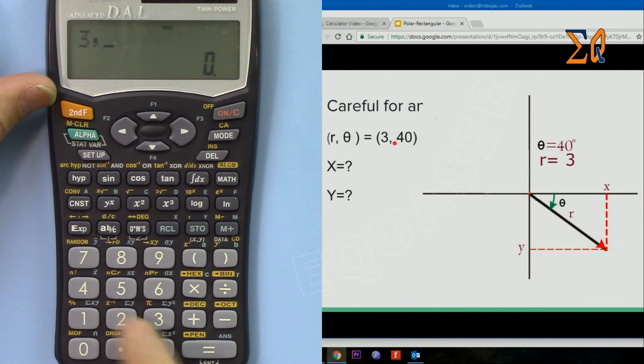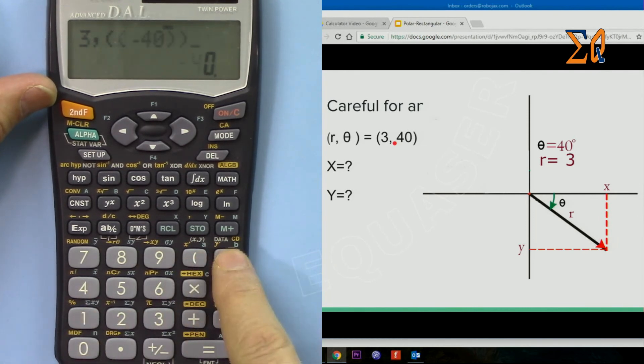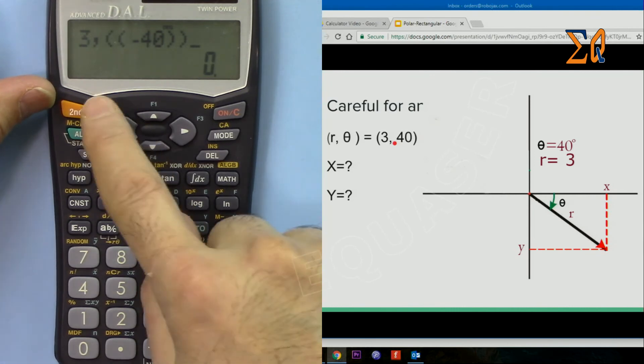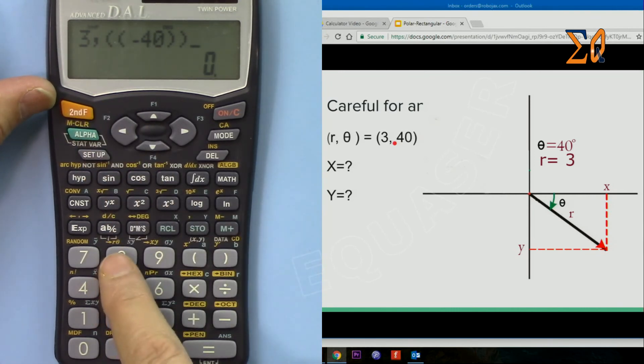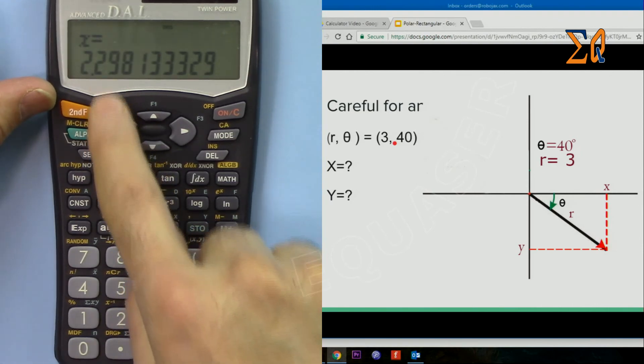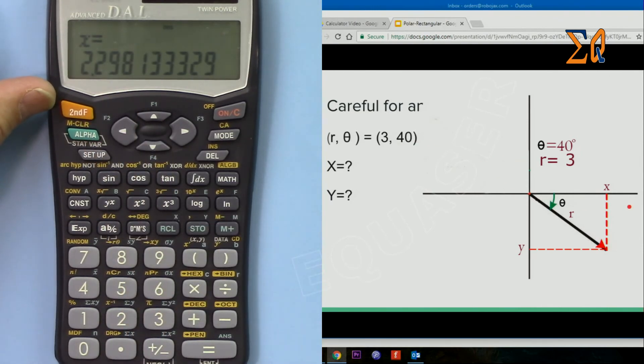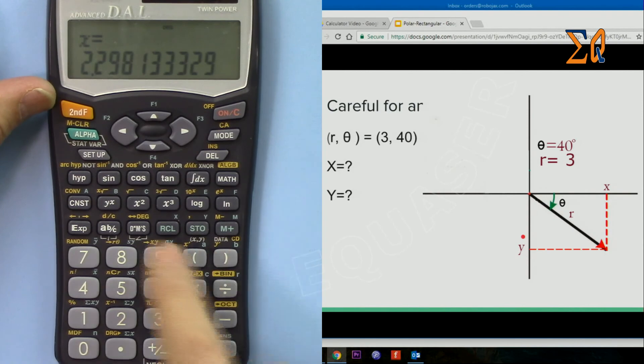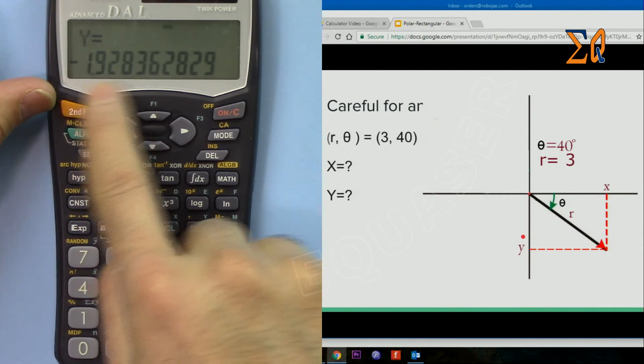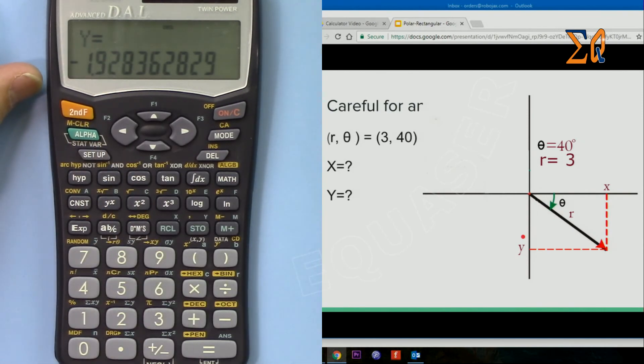Now second function and then X and Y. So it shows that X is 2.2. Now the Y should be minus, so recall Y, minus 1.9, which is the correct one.